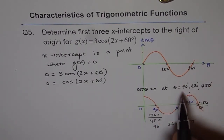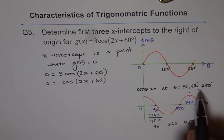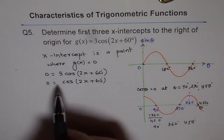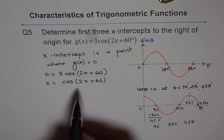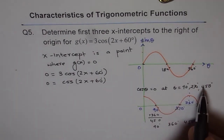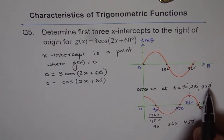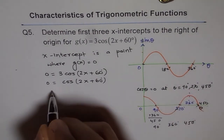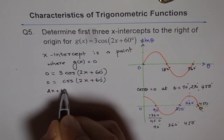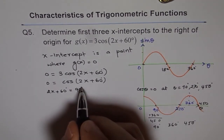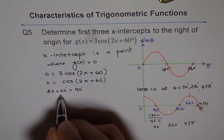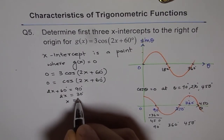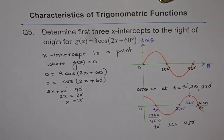So these are our 3 zeros — we can also call them x-intercepts on the right side of the origin. For the first one: 2x + 60° = 90°, so 2x = 90° − 60° = 30°, and x = 30 ÷ 2 = 15°. That gives us the first answer.